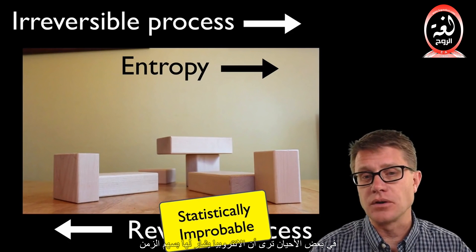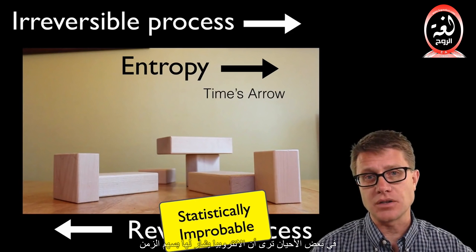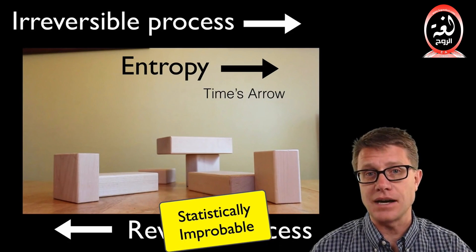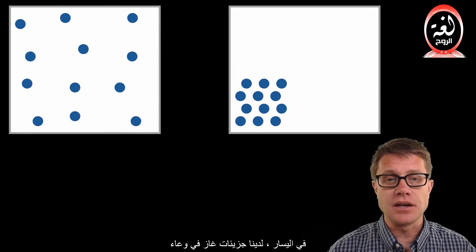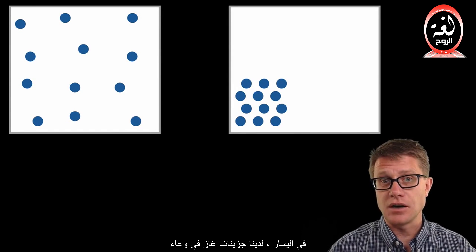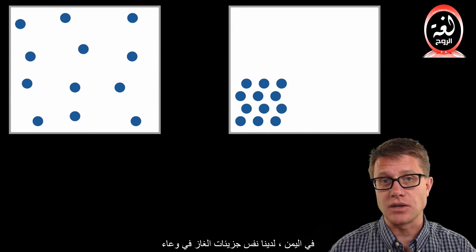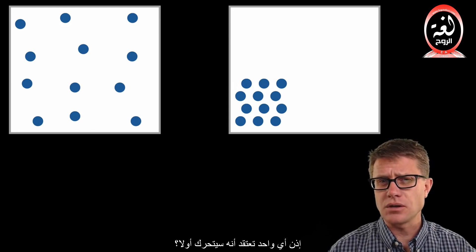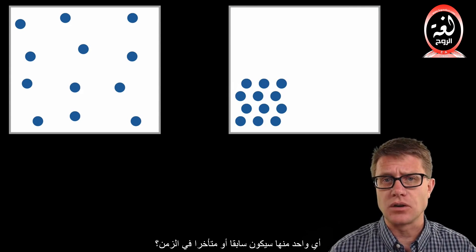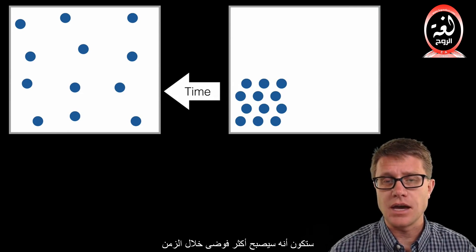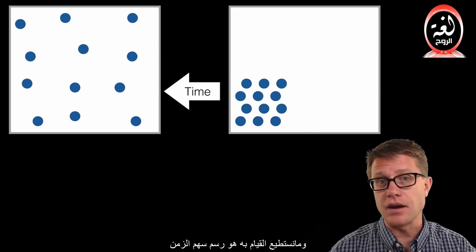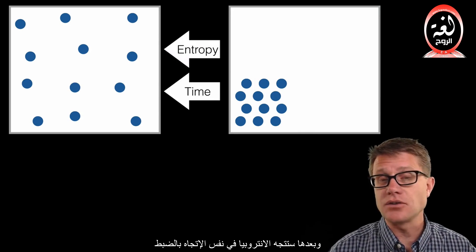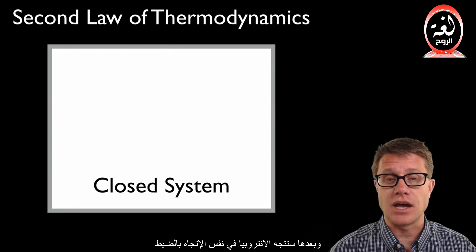Sometimes you will hear entropy referred to as time's arrow — it is going to move in the direction of time in an irreversible process. For example, on the left we have gas molecules clustered in a container, and on the right we have those same gas molecules spread out. Which took place first? The right is later in time — it becomes more disordered. You can draw the arrow of time and entropy goes in that same exact direction.